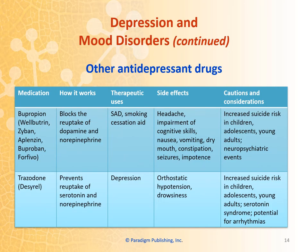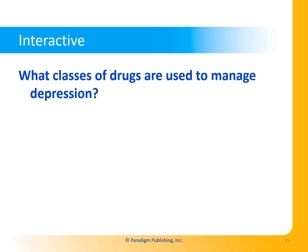Some other antidepressant drugs include bupropion and trazodone. The classes of drugs used to manage depression include SSRIs, SNRIs, TCAs, and monoamine oxidase inhibitors.